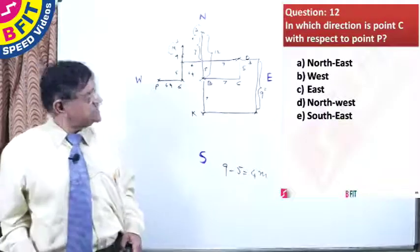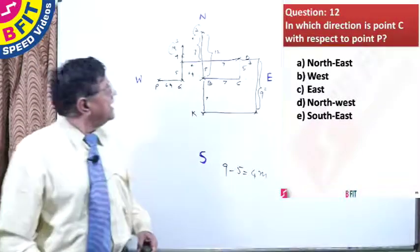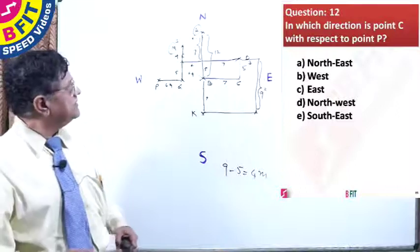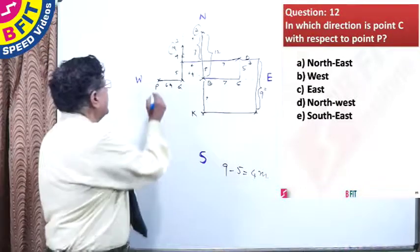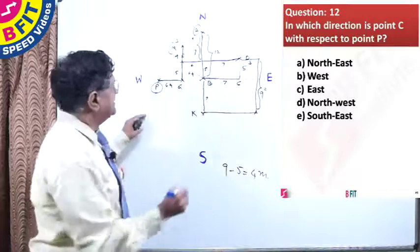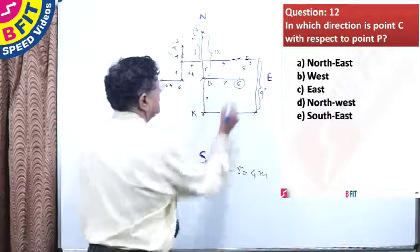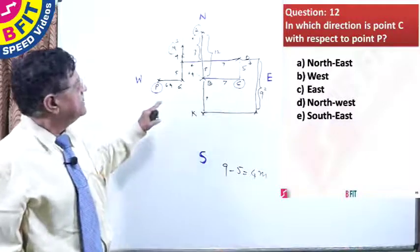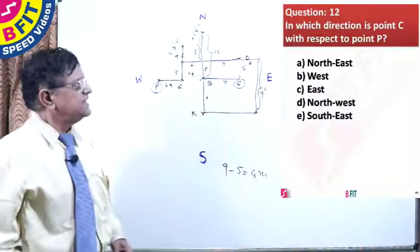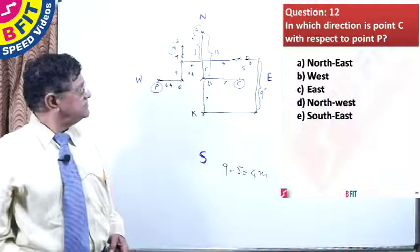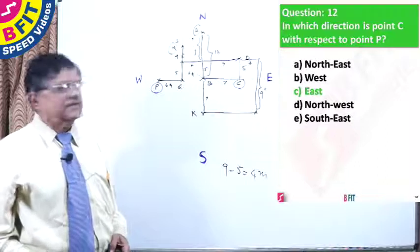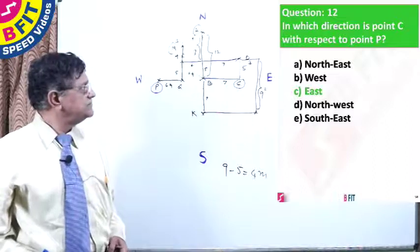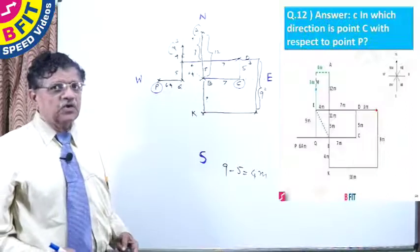The next question: in which direction is point C with reference to point P? Point P is here and point C is here on the map. The answer is obviously east. The answer slide confirms: option C — east. The map slide also confirms this.